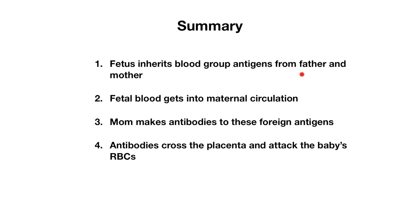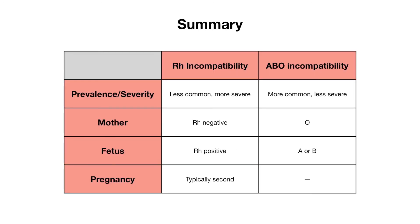In summary, the fetus inherits blood group antigens from both mom and dad. Fetal blood gets into maternal circulation and mom makes antibodies to these foreign antigens, which then cross the placenta, attacking baby's RBCs and leading to hemolytic anemia. RH incompatibility is less common but more severe; mom is typically RH negative and fetus RH positive, usually occurring in the second pregnancy. With ABO incompatibility, mom is blood type O, the fetus has A or B antigens, and it can happen in any pregnancy.